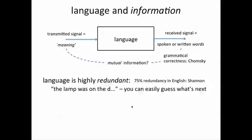He came to this conclusion by conducting experiments, such as asking somebody to guess the next letter in this sentence. For example, the lamp was on the D. Most of you would guess desk. Many such examples show that context, history, experiences allow us to essentially predict the next word or the next letter.